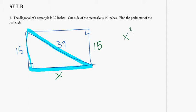So I could do x squared plus 15 squared equals 39 squared, using the Pythagorean theorem to solve for x.